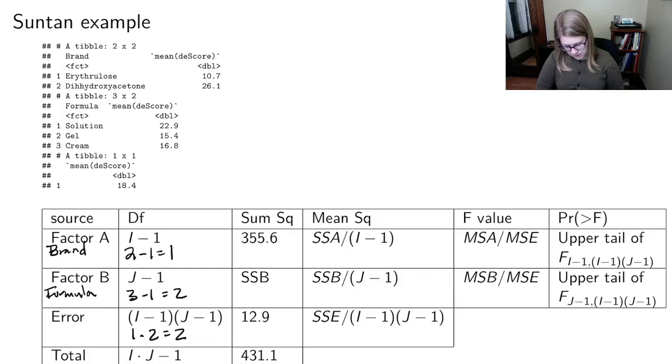And then for the total, I have I, which is two times J, which is three minus one. So that's six minus one is five. So those are my degrees of freedom.